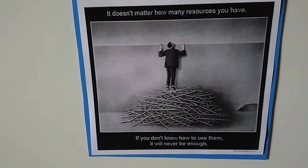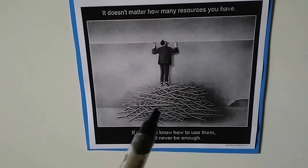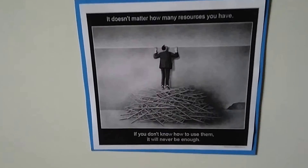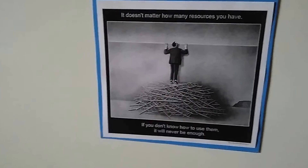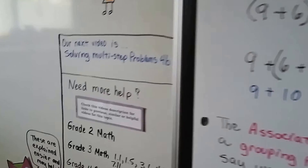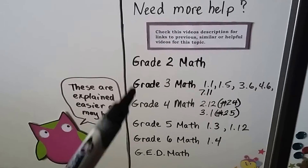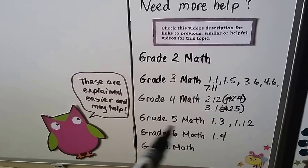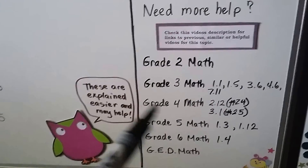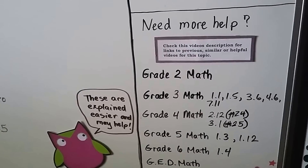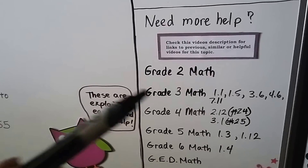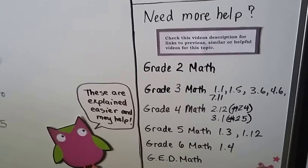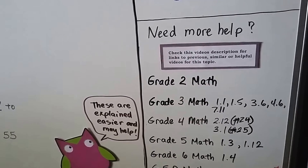I'm putting so much at your fingertips to help you. It doesn't matter how many resources you have if you don't know how to use them. I'm giving you these videos and links to additional videos — grade 3 math videos 1.1, 1.5, 3.6, 4.6, 7.11; grade 4, 5, and 6 math videos — explaining order of operations and commutative and associative properties. If you're having trouble, try watching those linked videos to help yourself start climbing that ladder.